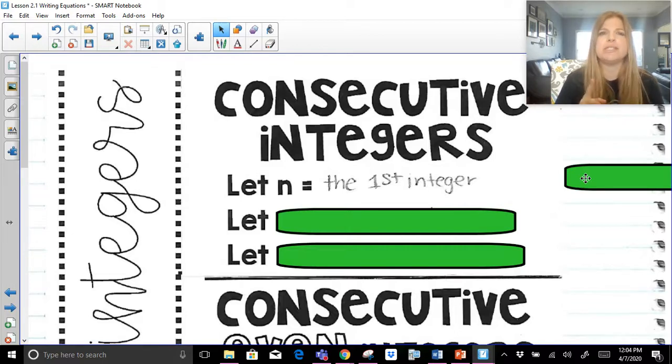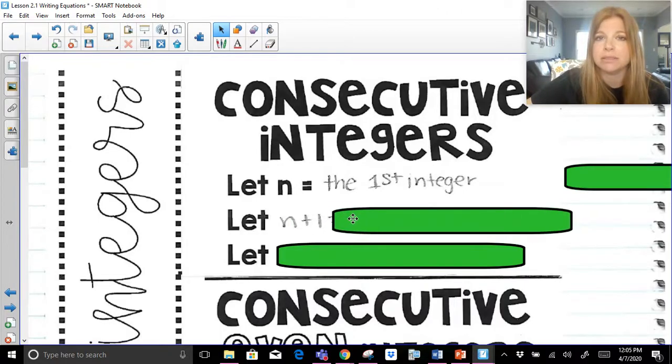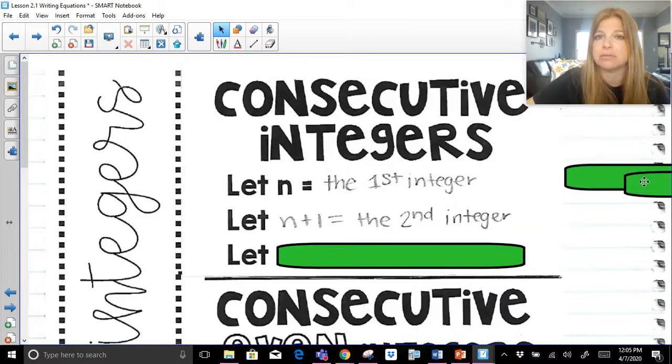Now, if the first integer was, let's say 5, what's the next integer after 5? It would be 6. Well, how do you go from 5 to 6? You simply add 1. So if n is the first integer, then n plus 1 would be the second integer, right? So if n was 5, if this was 5, the next integer would be 5 plus 1, which is 6.